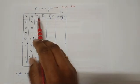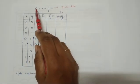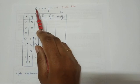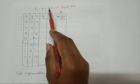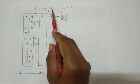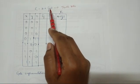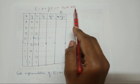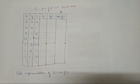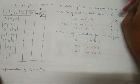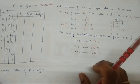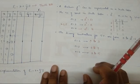The boolean function given is f1 = x + y̅z. To write the truth table, the first thing we always look for is how many variables are there, because depending upon the number of variables, the number of entries also changes.